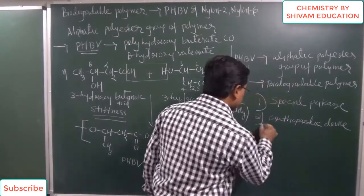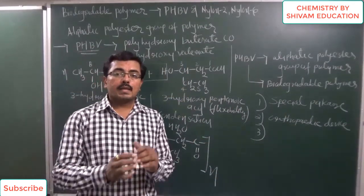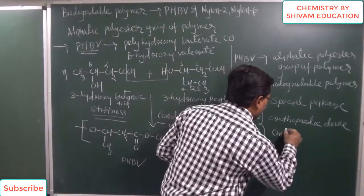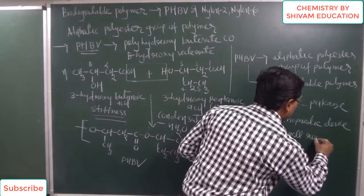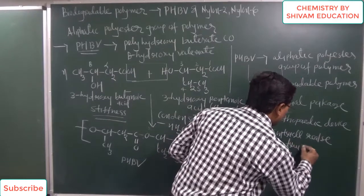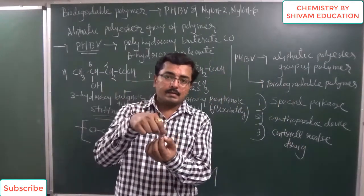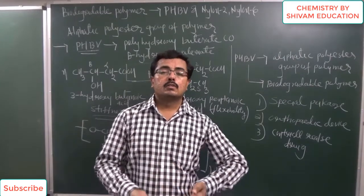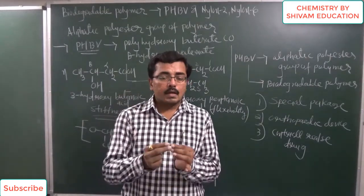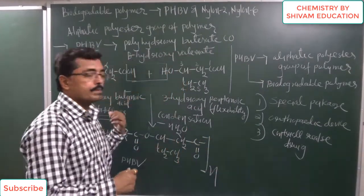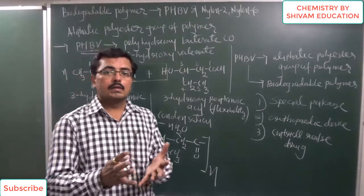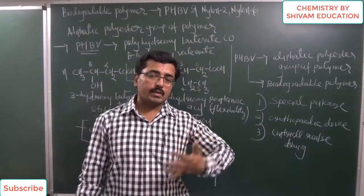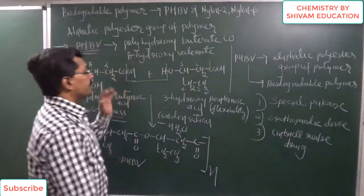Third and most important use: PHBV is used to make controlled release drug capsules. This means that when a capsule contains a drug inside, the outer cover of that capsule is made of PHBV. The drug will be released in a controlled manner as PHBV degrades. So for making the cover of controlled release drug capsules, PHBV is very widely used.